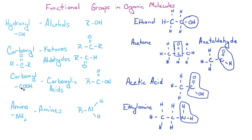Carboxyl groups have the chemical formula COOH. These are known as carboxylic acids. The general structure is a C double-bonded O, and then you have a hydroxyl group. It's very important to remember the difference between carboxyl and carbonyl groups. An example of a carboxylic acid is acetic acid, also known as vinegar. You can see here you've got your carbon, double-bonded oxygen, and the hydroxyl group right here.